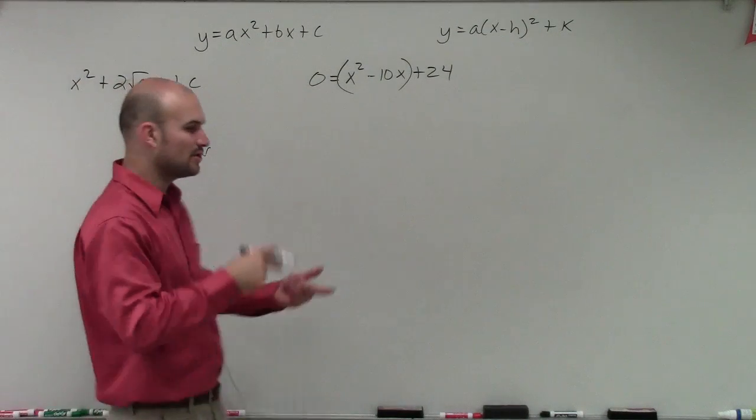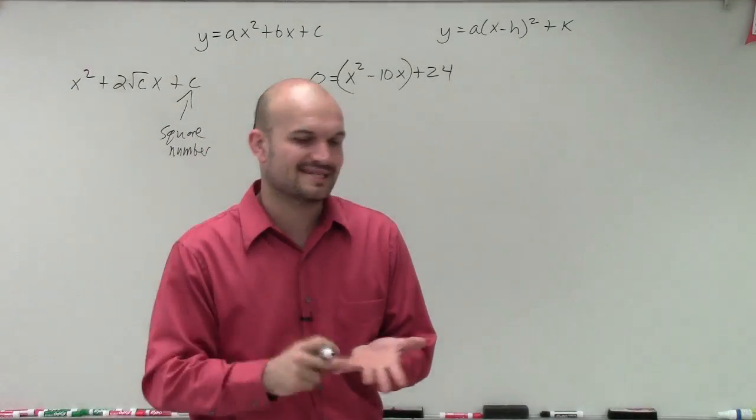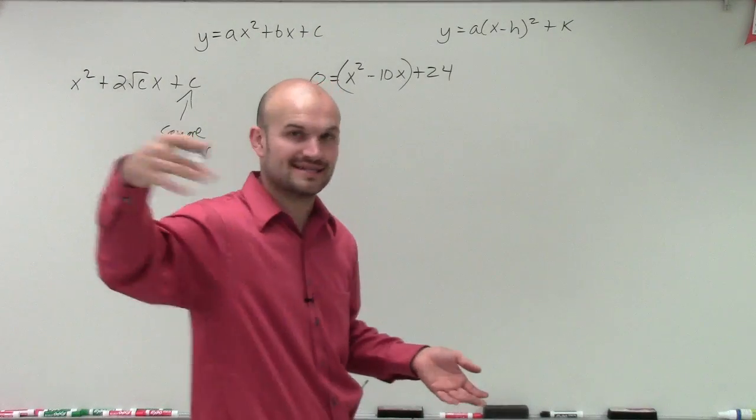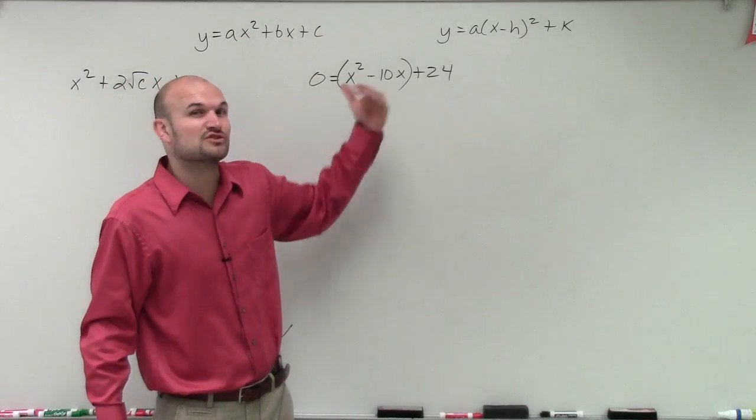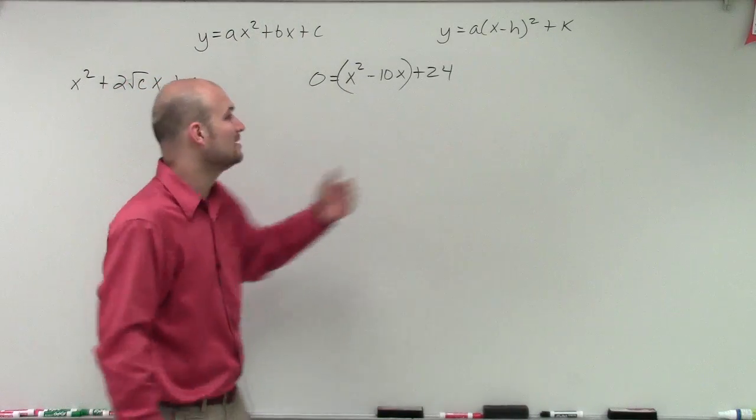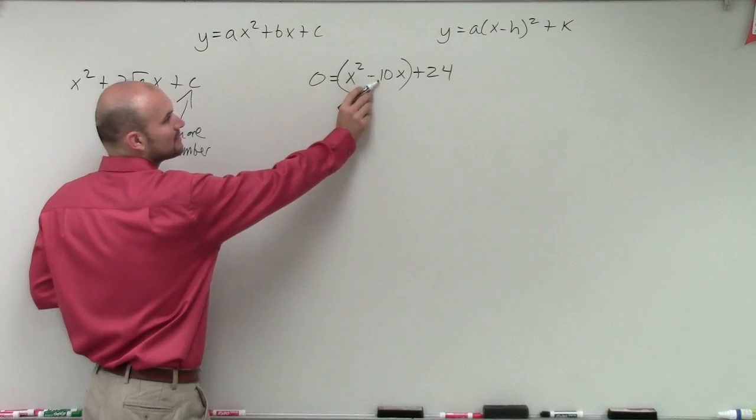Remember our square numbers were 1, 4, 9, 16, 25, 36, and so on. So I need to create a number. 24 is not a square number, so I'm going to create a square number that's going to be a part of this.